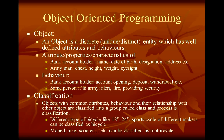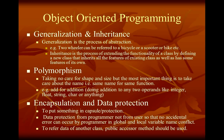Objects with common attributes, behaviors, and their relationship with other objects are classified into a group called a class, and this process is called classification. For example, different types of bicycles like 18-inch, 24-inch, and sports cycles of different makers can be classified as bicycle. Bikes, scooters, etc., can be classified as motorcycles. Generalization is the process of abstraction — for example, a two-wheeler can be referred to as a bicycle, scooter, bike, or any vehicle with two wheels. Inheritance is the process of extending the functionality of a class by defining a new class that inherits all features of an existing class as well as has some features of its own.